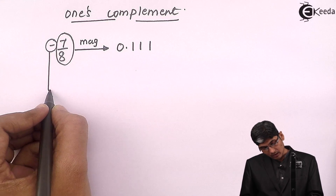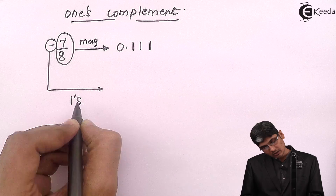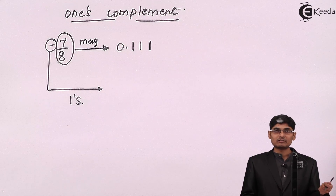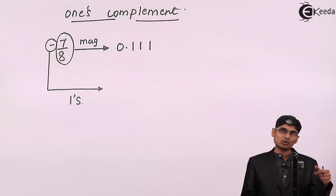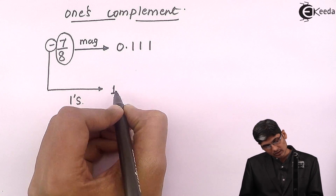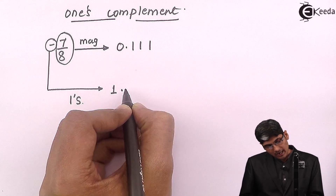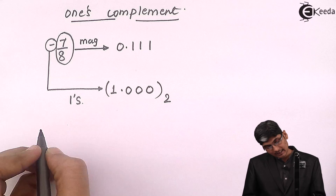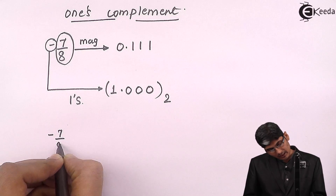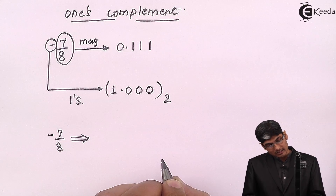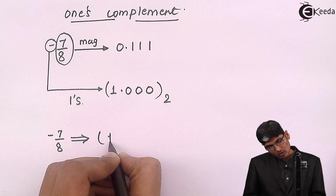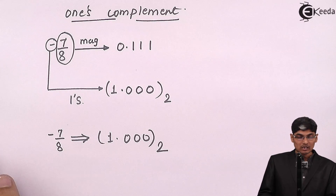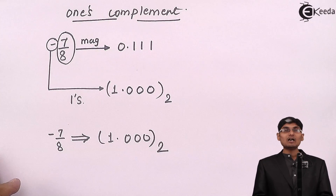Now for the sign part, we apply the one's complement algorithm, which means we invert all the bits — 0 becomes 1 and 1 becomes 0. So this 0 will be inverted to 1 and the rest of the 1s will be inverted to 0. Therefore, minus 7/8 in decimal is equivalent to 1.000 in one's complement base 2.